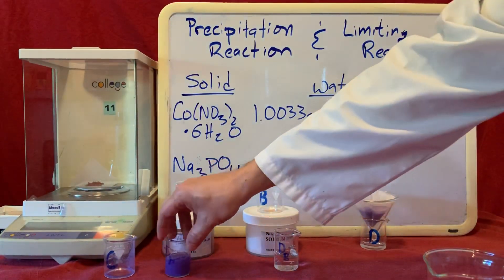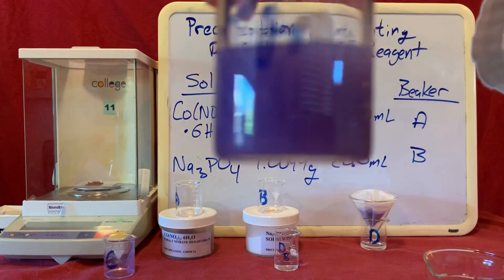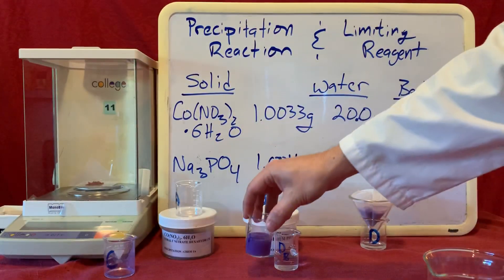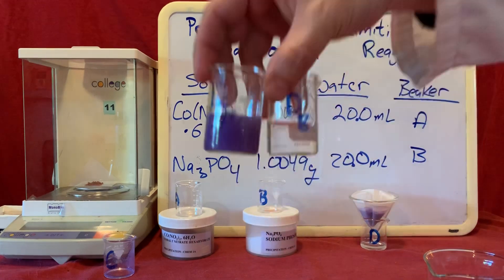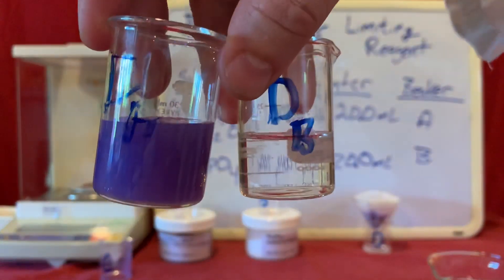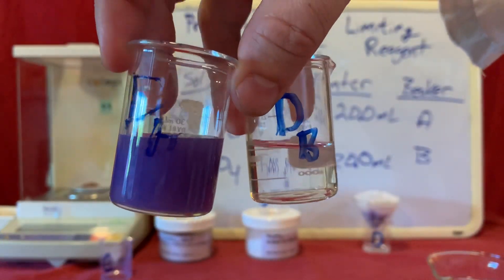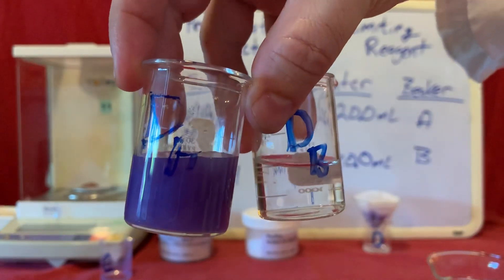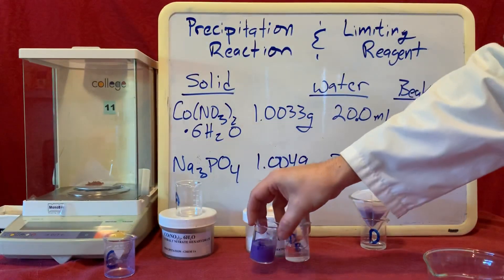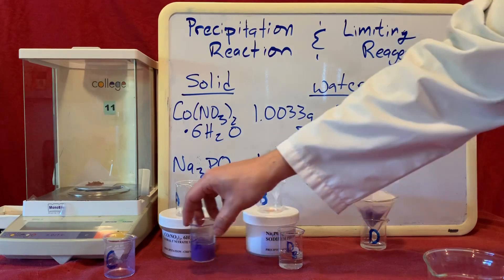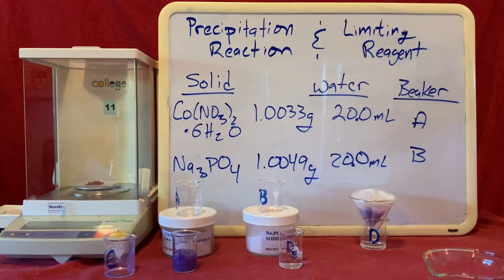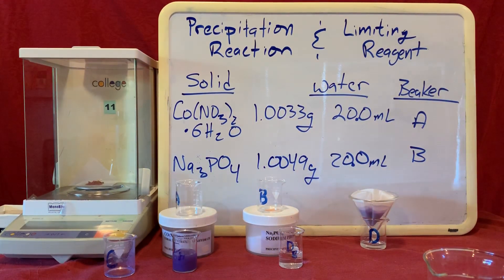Now D sub A looked quite different from D sub B. What does this difference tell you about what was in the supernatant that was available to react?